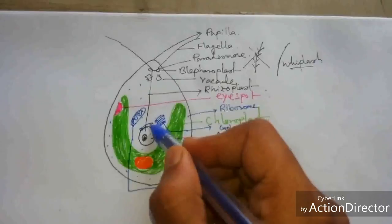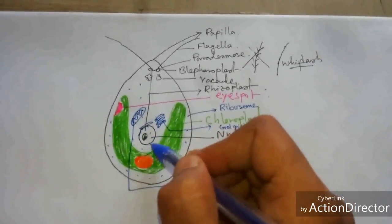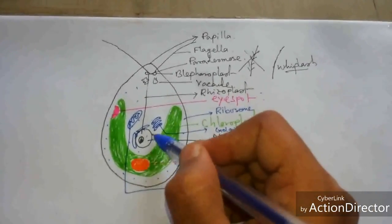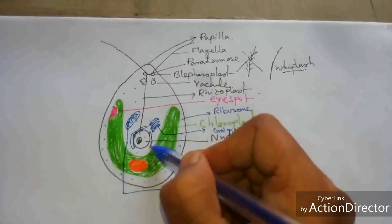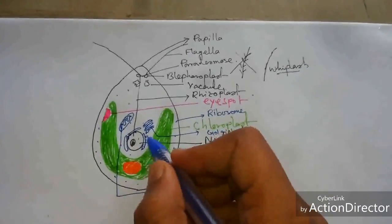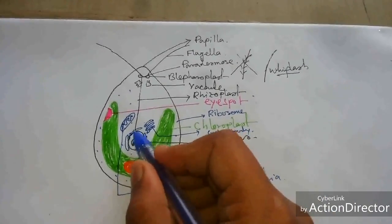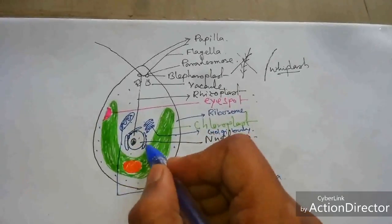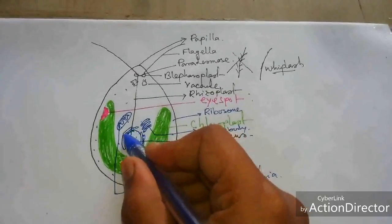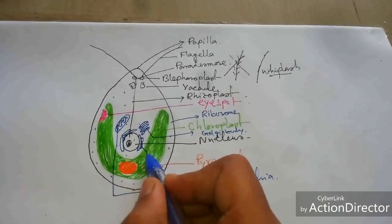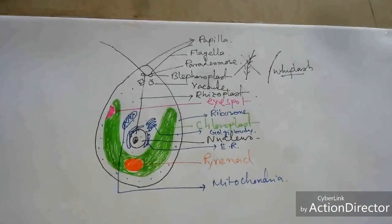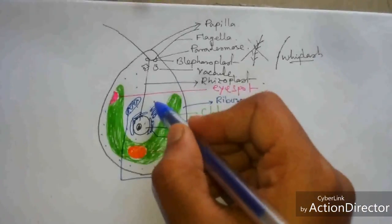Endoplasmic reticulum is also present — not within the nucleus, but above the nucleus, endoplasmic reticulum is also present. These are the endoplasmic reticulum.